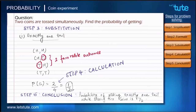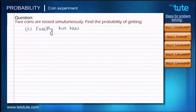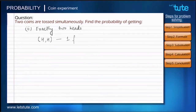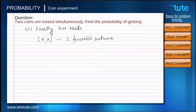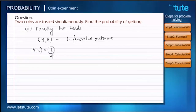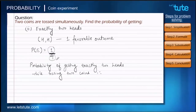Now we'll follow the same steps for the second sub-question: find the probability of getting exactly two heads. Out of the four possible outcomes, the first outcome is the only one where we get exactly two heads, so there is only one favorable outcome. Applying the formula gives us the ratio 1 upon 4. There is no separate calculation step here, so we conclude: the probability of getting exactly two heads while tossing two coins is 1 by 4.